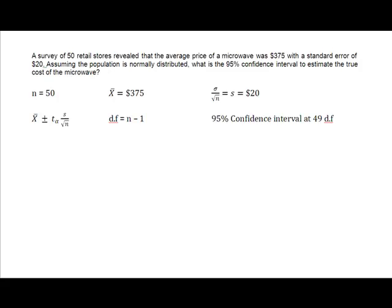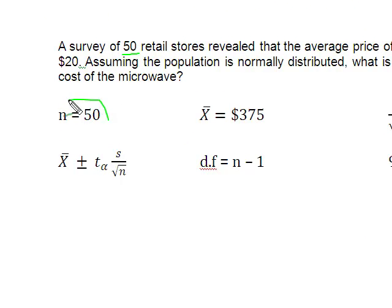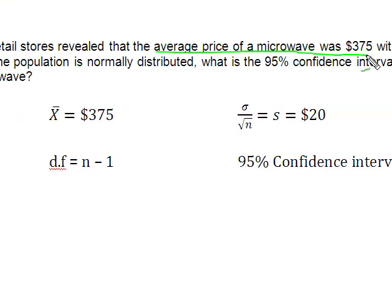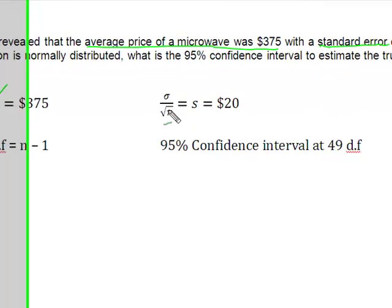Well, what I have done is I have accumulated some information that I'm going to need to solve this problem. First and foremost, I've gone through and this is what I've gathered. I've gathered that 50 represents my value for n, the number in my sample. The average price of the microwave was $375, which gives me x̄. Standard error is $20.